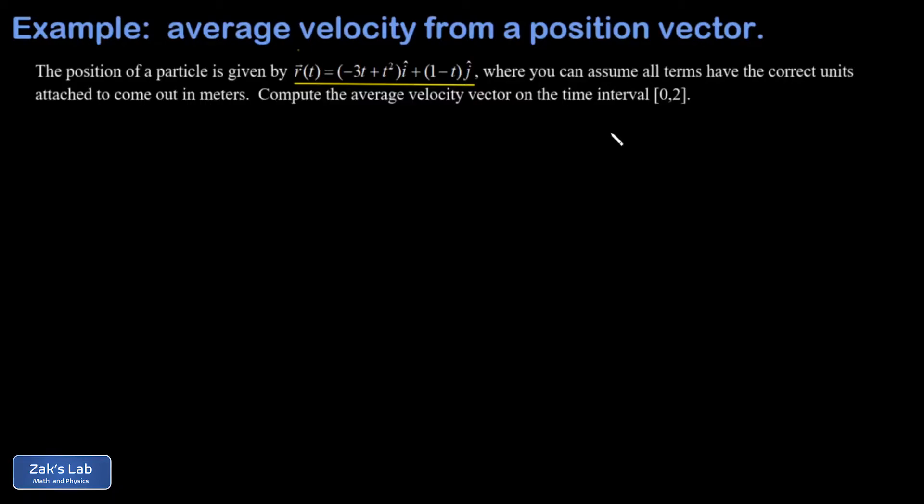And we're told we can assume all the terms have the correct units attached to come out in meters. And what we're computing in this problem is the average velocity vector on the time interval 0 to 2.